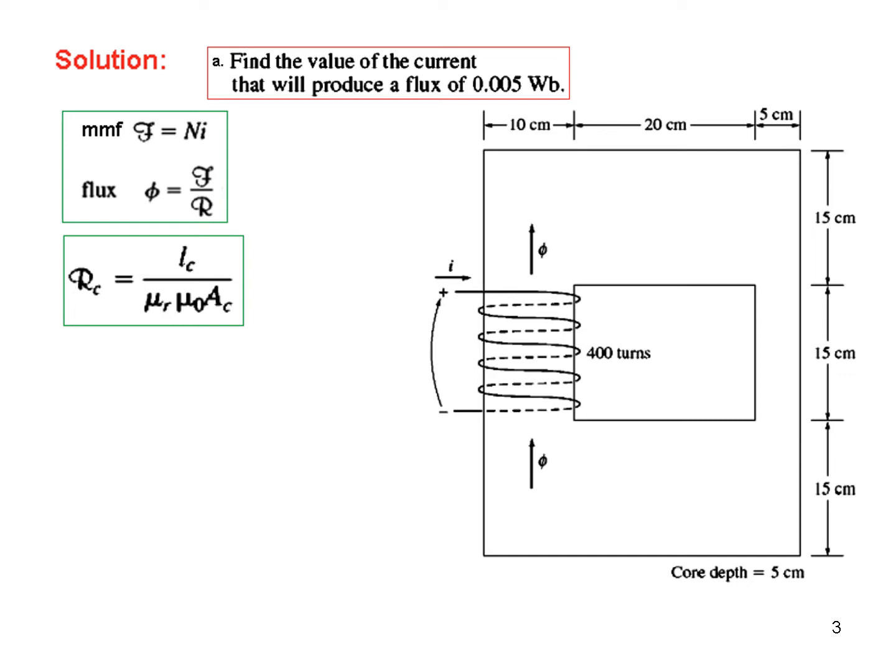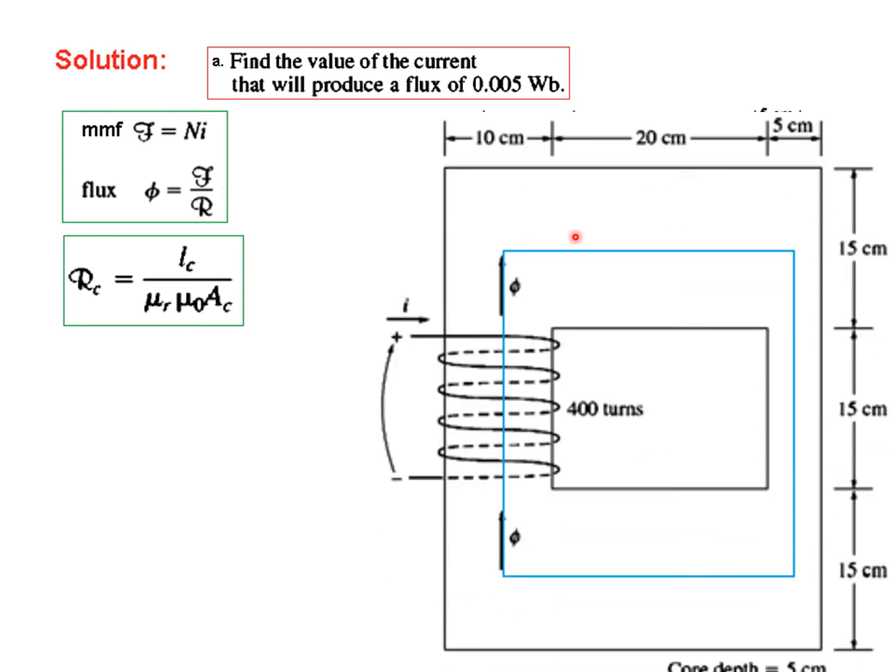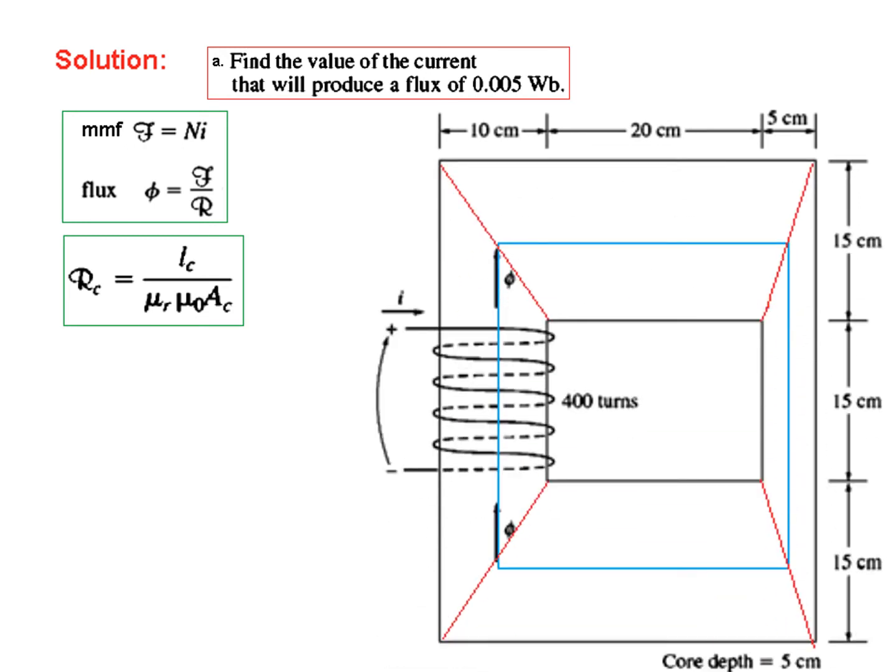But before proceeding we have to find the mean path. So let's draw the mean path. This is the mean path and we have to find the value of L_c. First of all we have to define how many different L_c's are there keeping in view the areas. So to do that, as I had mentioned in one of my previous videos, we will connect the corners. So we have connected the corners and now you can see this is one length, this is second length, and some of this and this will be third length because the area or the width is same here.